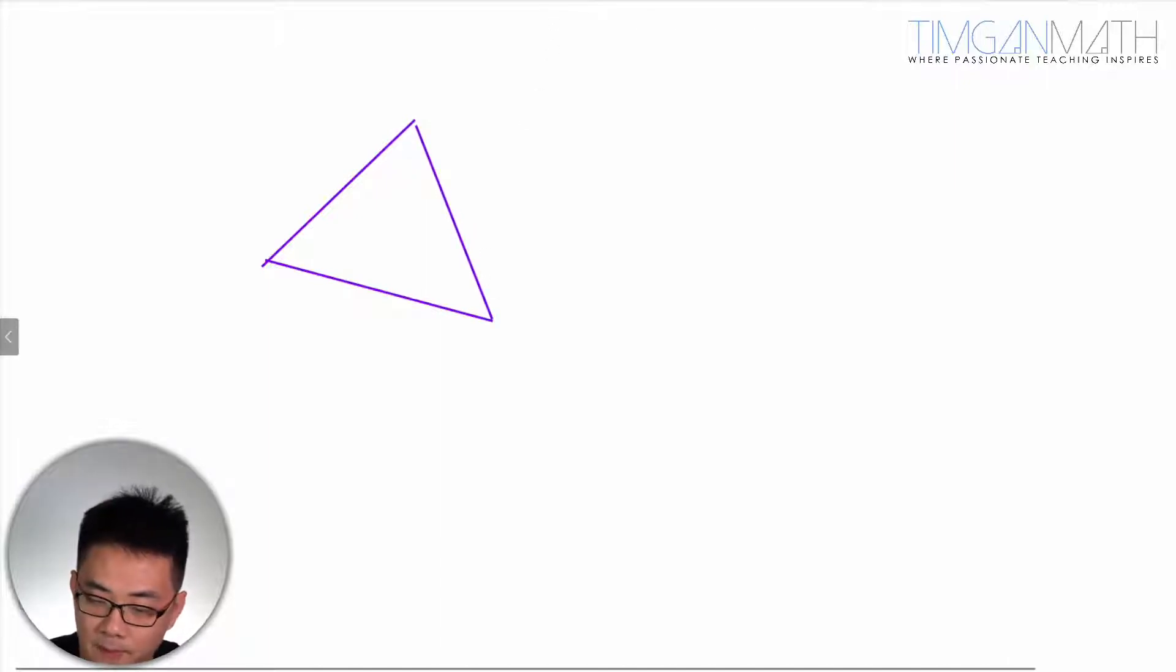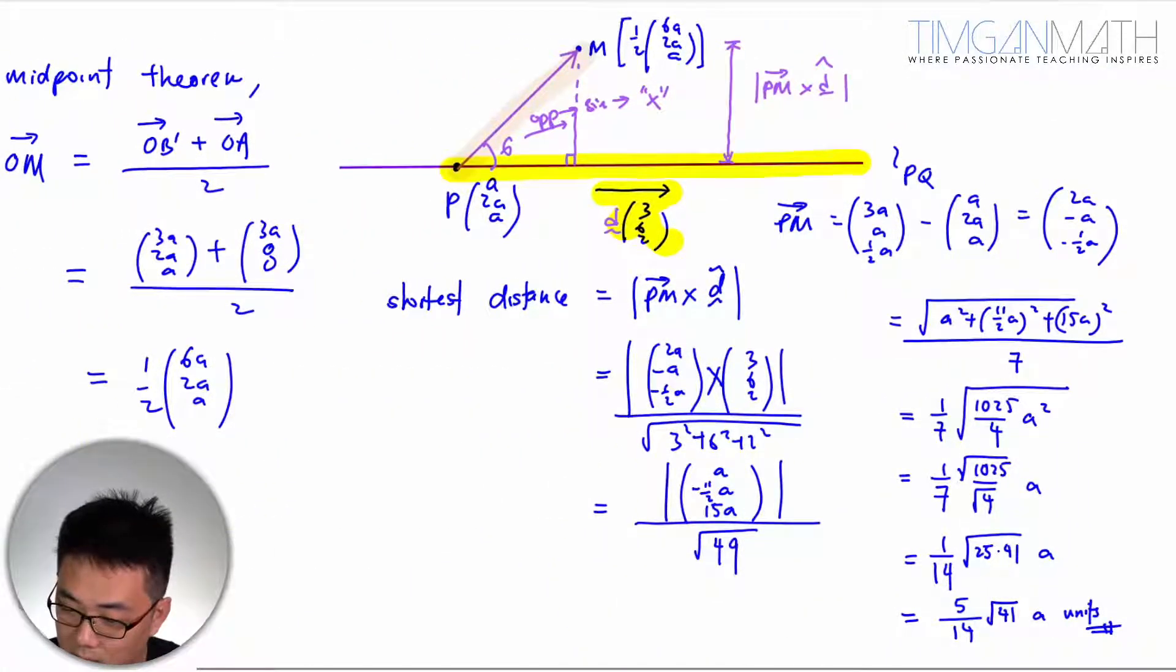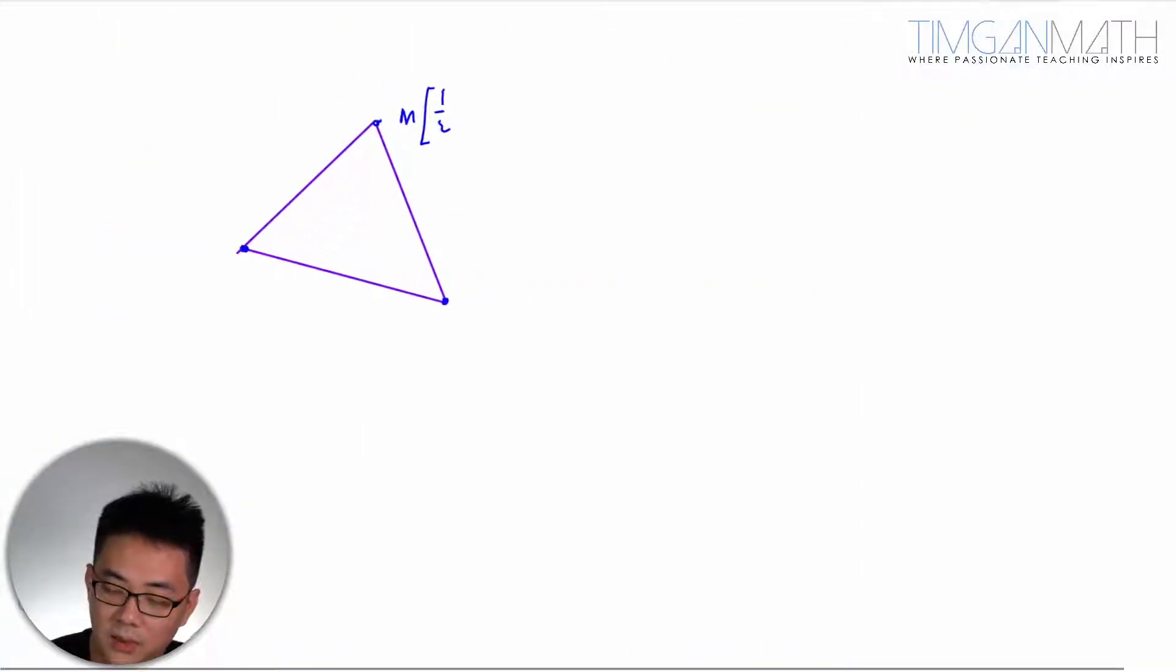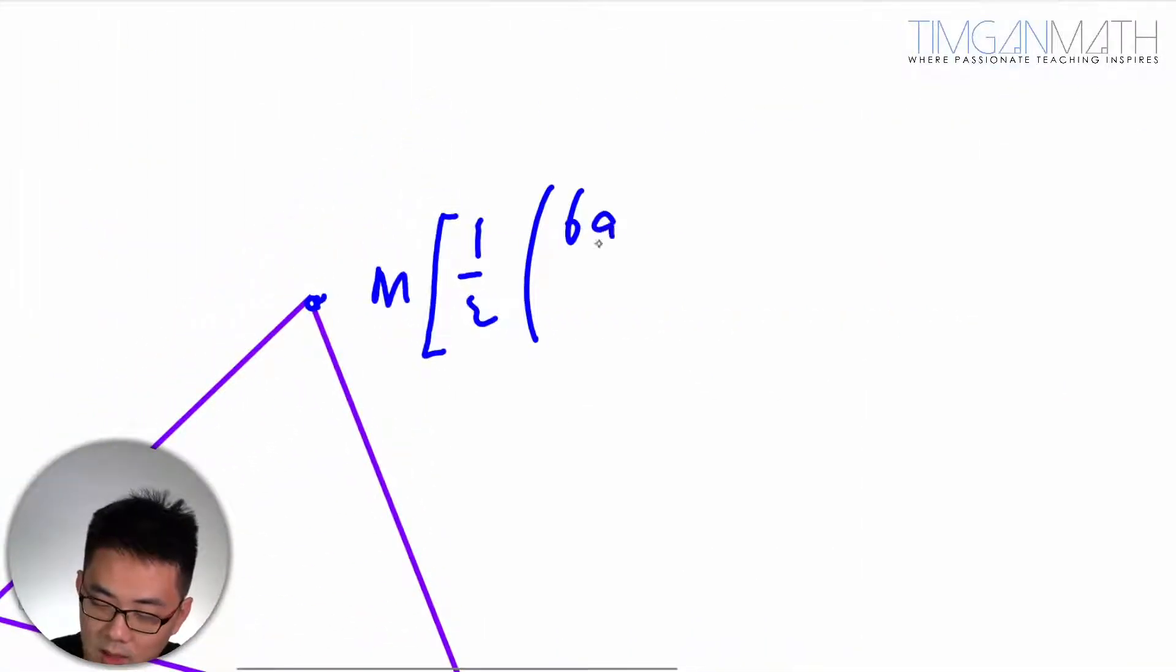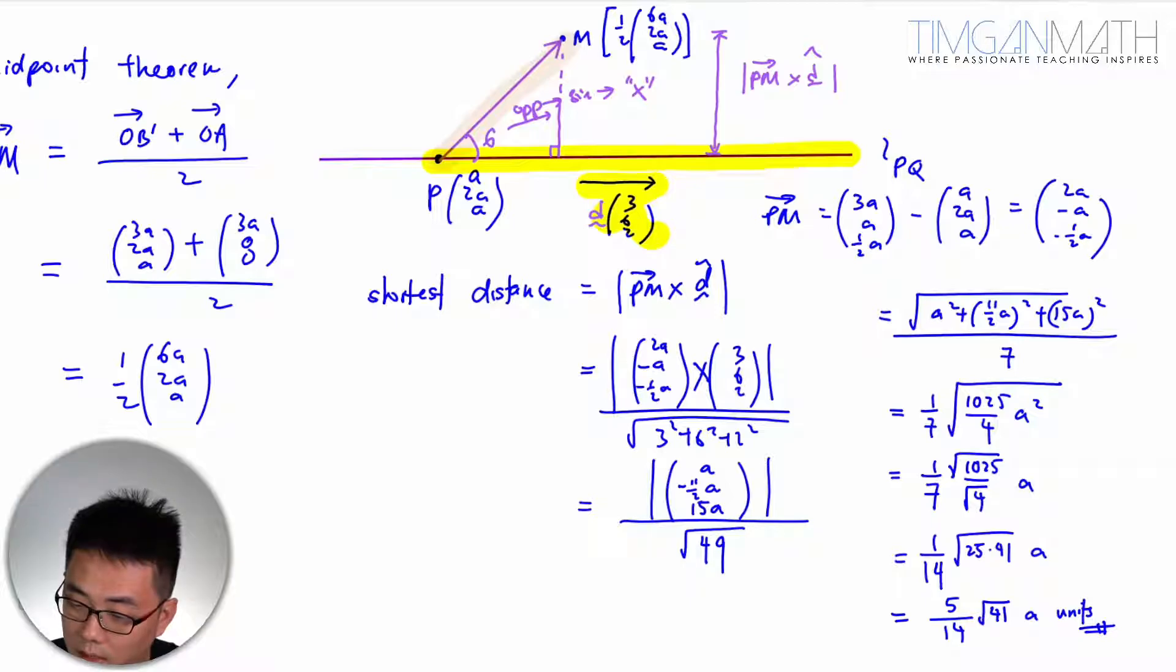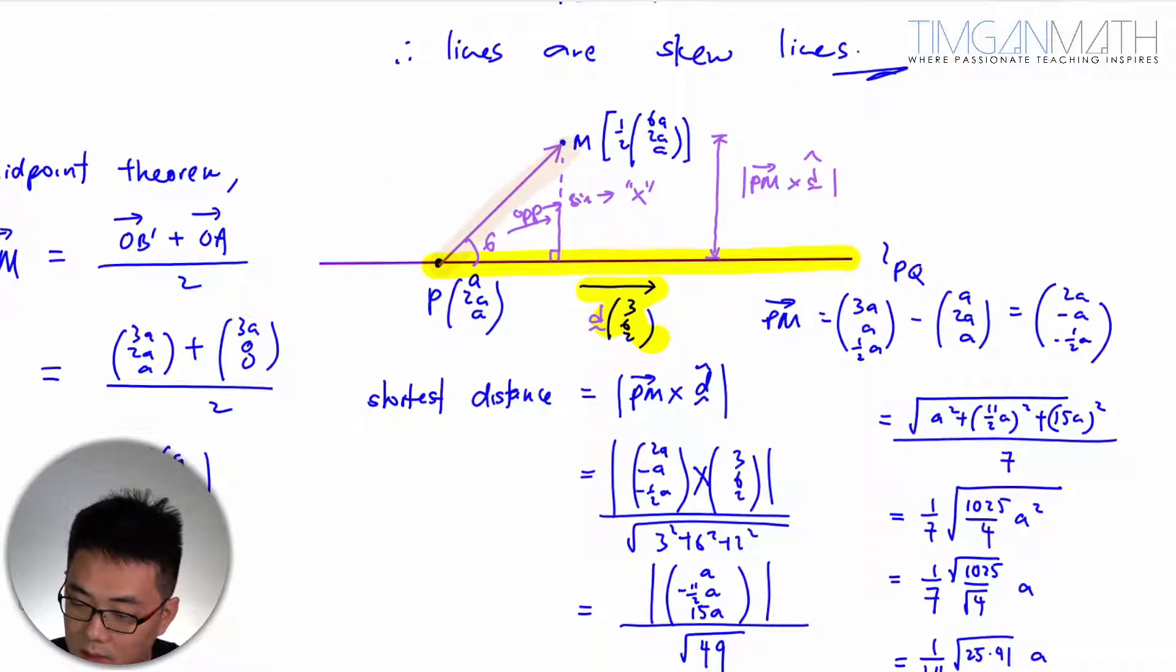So I have M, I've got Q and M. So M is half something. Let me turn. M is actually half 6A, 6A, 2A, and 6A, 2A, and A. So 6A, 2A, 6A, 2A, and A. Great.